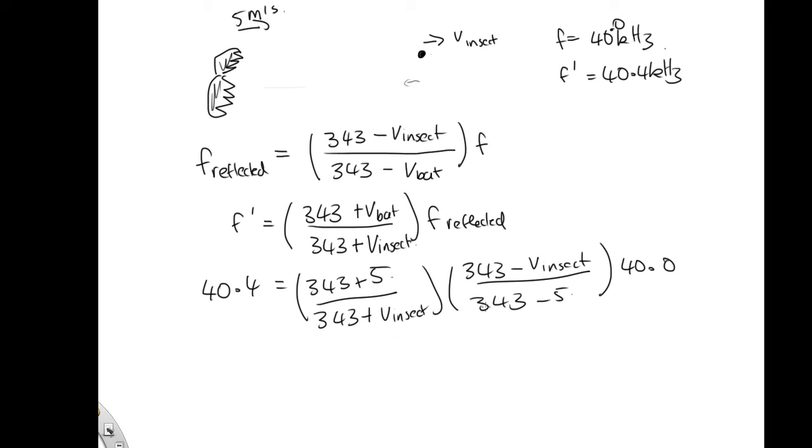So now we have an equation which is a little bit difficult to solve, but there is only one unknown, the velocity of the insect in this equation. So it's perfectly possible. So dividing this 40.4 by the 40, and solving for 343 plus 5, over 343 minus 5,